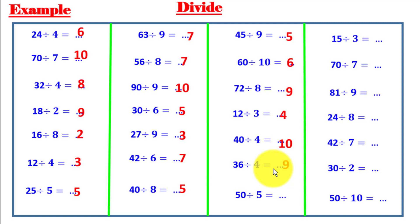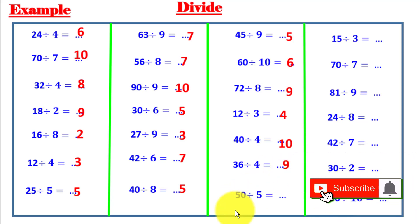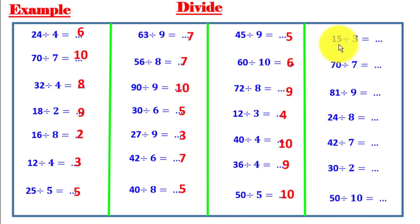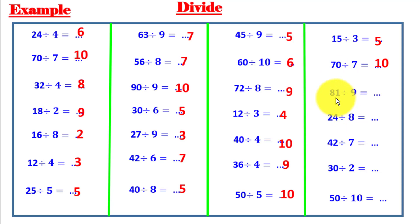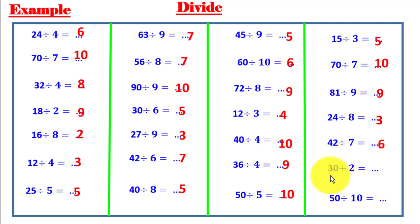We now have two equal products: 4 times 9 equals 6 times 6 equals 36. 50 divided by 5 equals 10. 15 divided by 3 equals 5. 70 divided by 7 equals 10. 81 divided by 9 equals 9, because 9 times 9 equals 81. 24 divided by 8 equals 3. 42 divided by 7 equals 6. 30 divided by 2 equals 15.